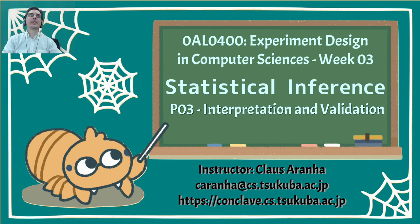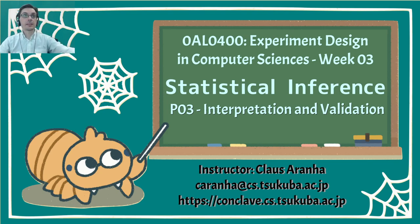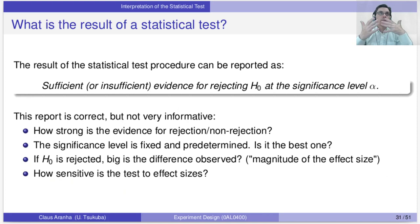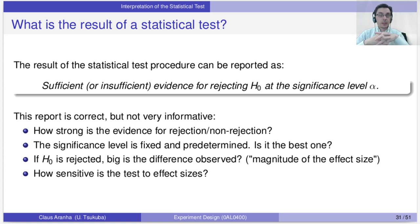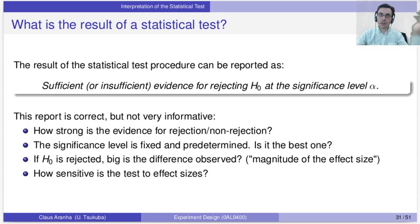Hello everyone, this is Experiment Designs in Computer Science, Week 3, Statistical Inference Part 3: Interpretation and Validation. My name is Klaus. In the last video we talked about how to execute a statistical test of null hypothesis in statistical inference, and we found that the result of the test could be reported as: we have sufficient evidence to reject the null hypothesis at significance level alpha, or we have insufficient evidence for rejecting the hypothesis at significance level alpha.